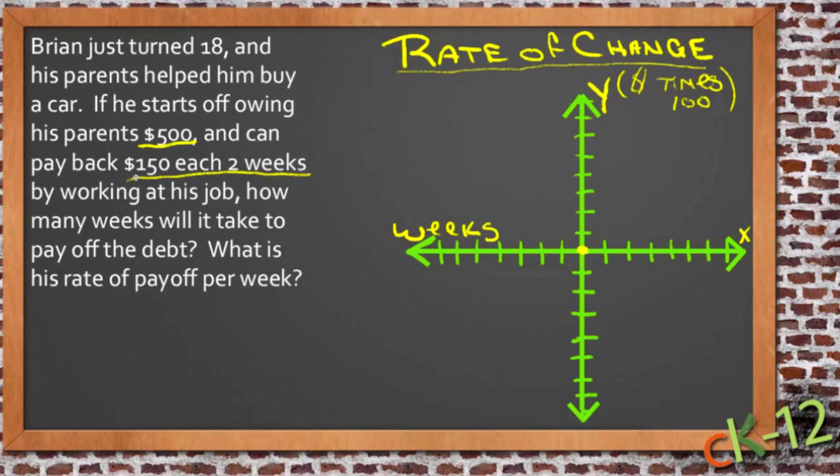Then it says here he pays back $150 every two weeks. So if we go over two weeks and go up to $150, that's his first payoff. This point right here represents two weeks, two on the x-axis, and $150 that he's paid off based on what we put on the y-axis.